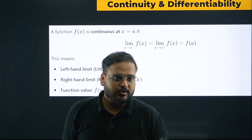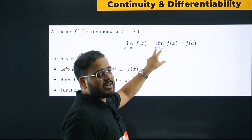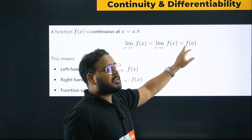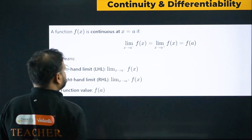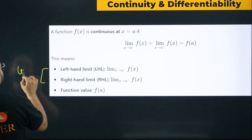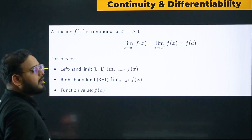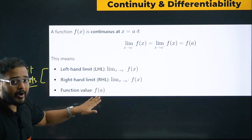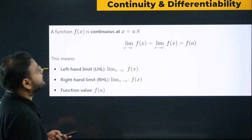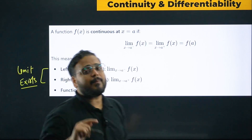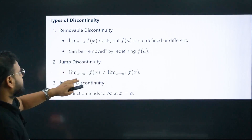For limits, the condition is: the limit must exist and be equal to the function value. If the left-hand limit equals the right-hand limit, the limit exists. If that limit also equals f(a), the function is continuous at that point. So limit existing plus equaling the function value means the function is continuous.